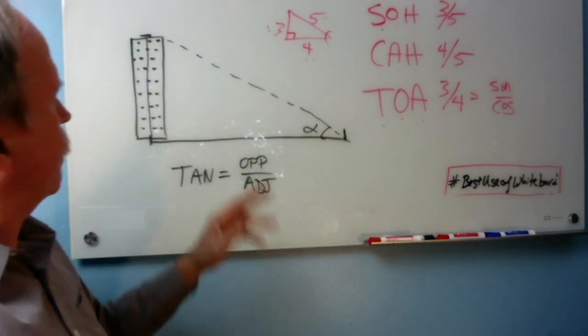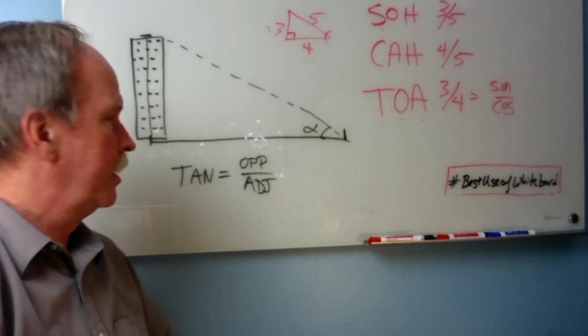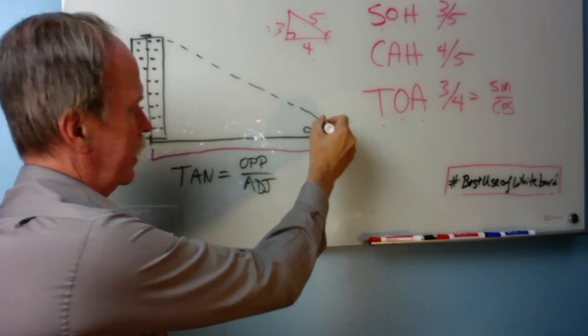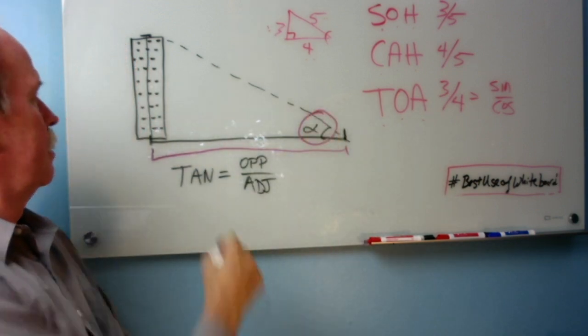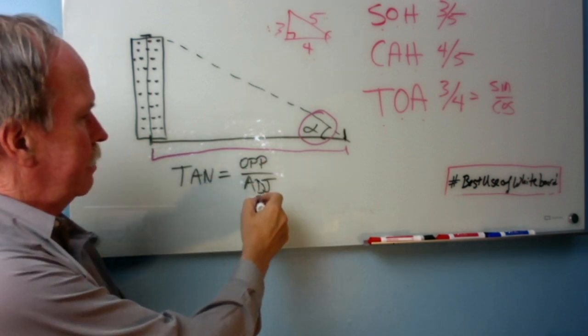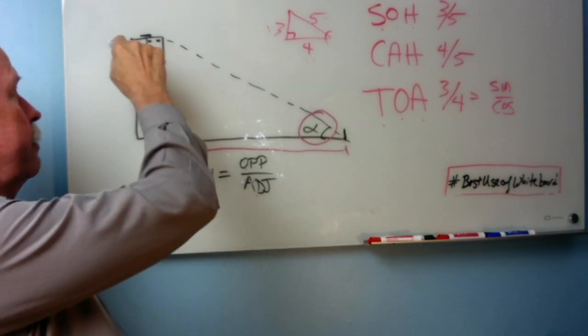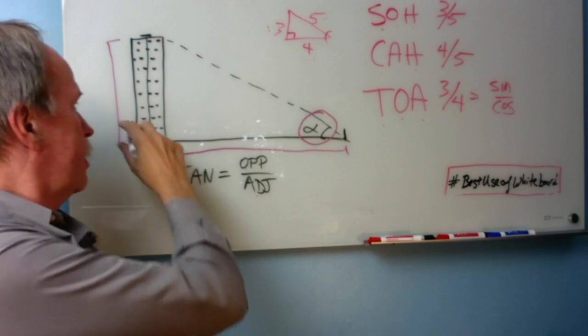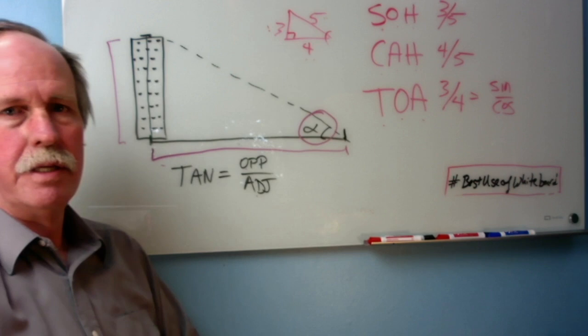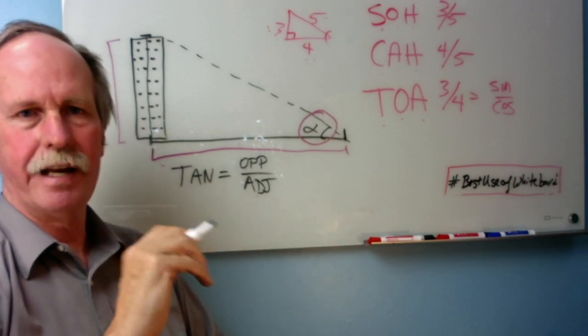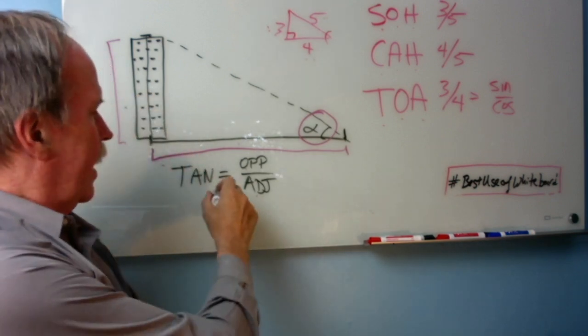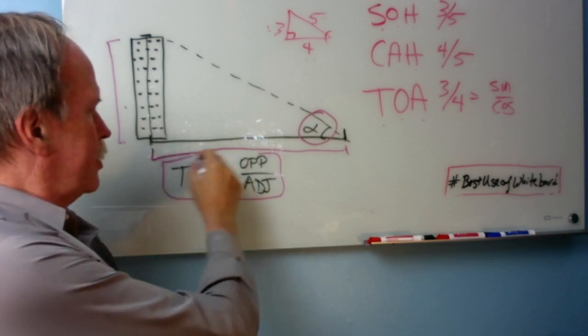Here it is. Say we want to find the height of this building. Now say we know this distance right here and we know this angle but we don't know the height of the building. Tangent is the opposite over the adjacent. So tangent will be this over this. We don't know this. We do know that and we know that angle. So by finding out what the tangent of that angle is we can find the opposite leg and all we have to do is just rearrange this equation right here.